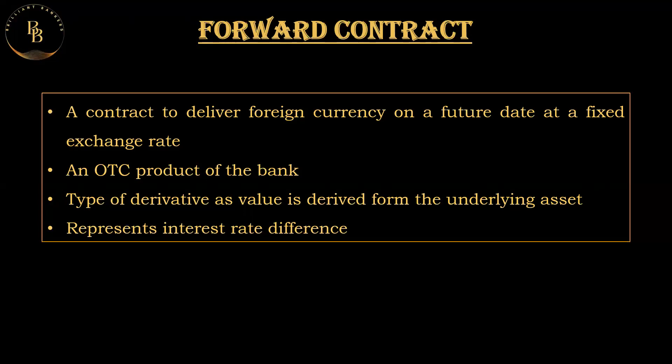A forward contract is an agreement between two parties to buy or sell an asset at a specified future date for a price agreed upon today. In the case of a bank or treasury, they deal with currencies — so a forward contract is a contract to deliver foreign currency on a future date at a fixed exchange rate. It is an over-the-counter product of the bank or treasury.